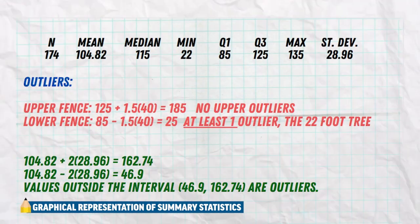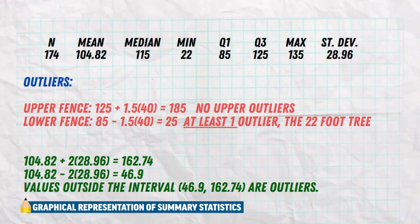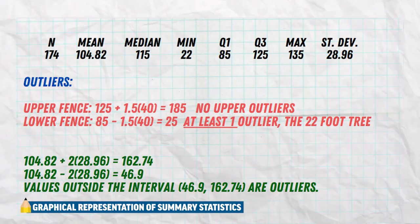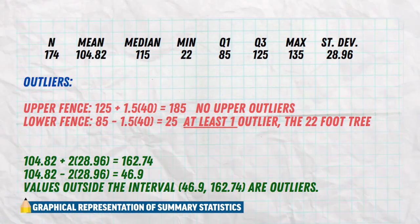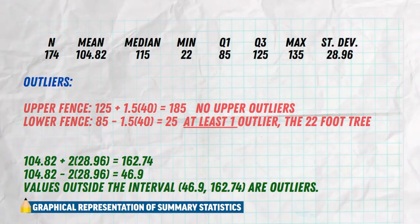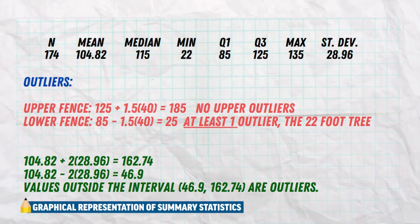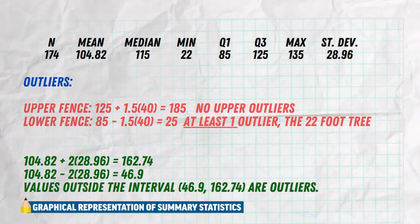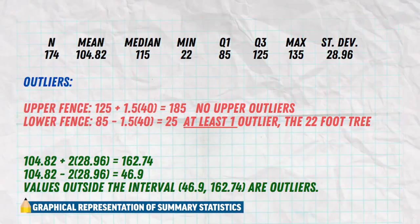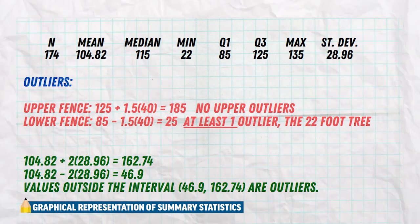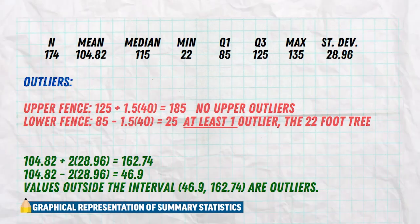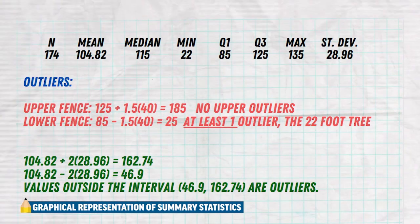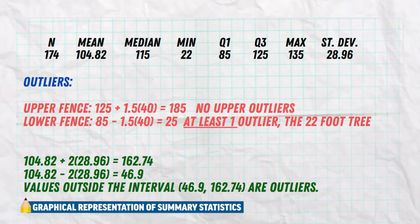They also love asking you to talk about outliers. We have two different outlier formulas. Using the fence method in red: taking the third quartile of 125 and adding 1.5 times the IQR, which is Q3 minus Q1, we get 185. The max is only 135, so there are obviously no values bigger than 185 — no upper outliers. The lower fence is Q1 of 85 minus 1.5 times the IQR, giving us 25. The min is 22, which is below 25, so we know we have at least one outlier — the 22-foot tree.